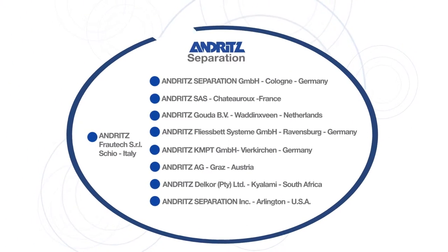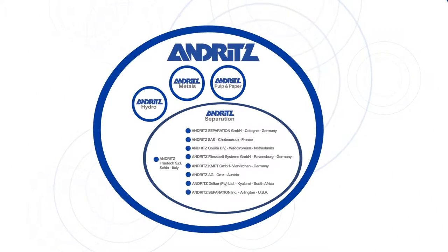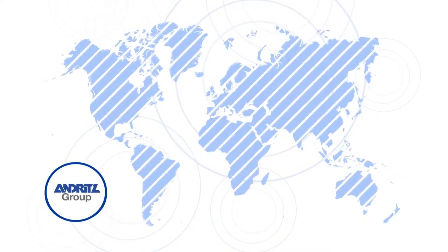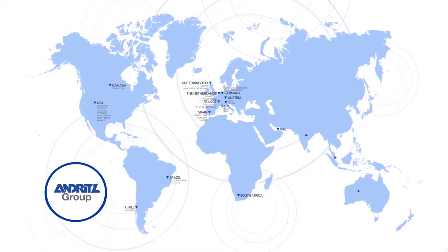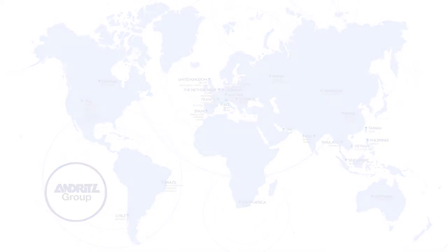Andritz Frautek has been a part of Andritz Separation since 2010. Andritz Separation is a business area of the Andritz Group, a global partner with 250 production sites and offices in 40 countries around the world.